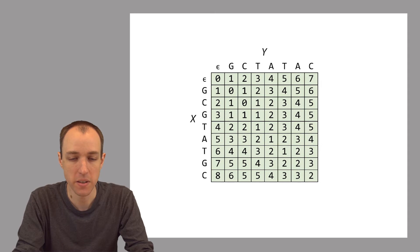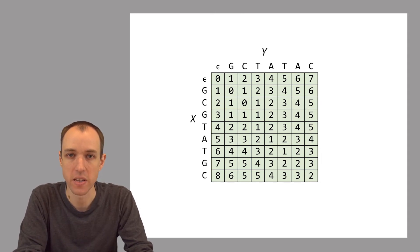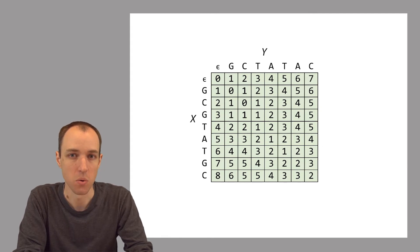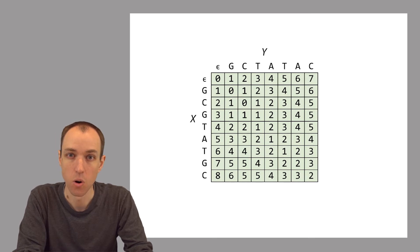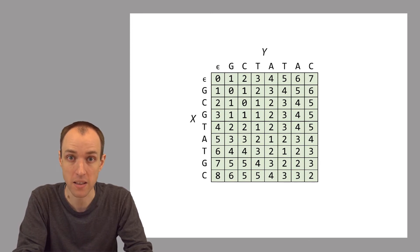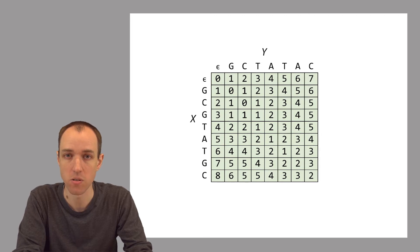It doesn't always make sense to penalize all these differences the exact same amount. So what if it turned out, for example, in practice that gaps were a lot less frequent than substitutions? Well, then it might make sense to penalize the gaps more than the substitutions. Or what if it turned out that certain substitutions, certain base-to-base substitutions, were more likely than others? Then we might want to penalize them less than those others.